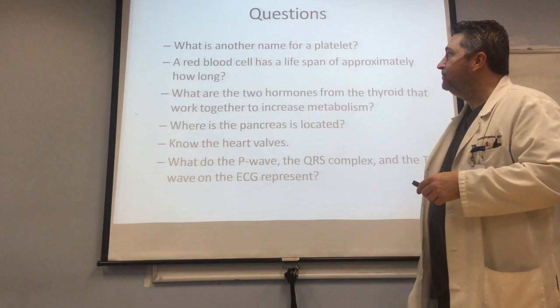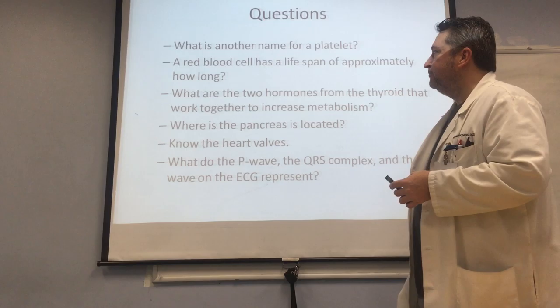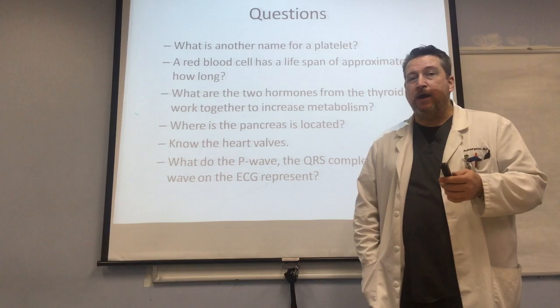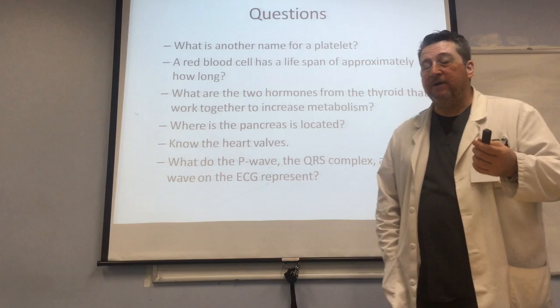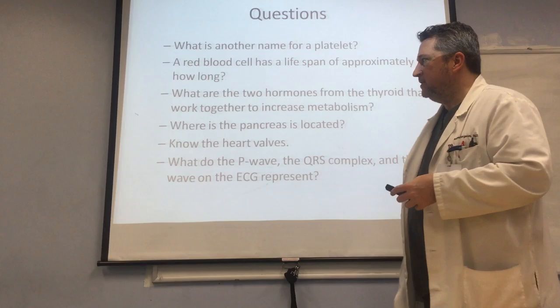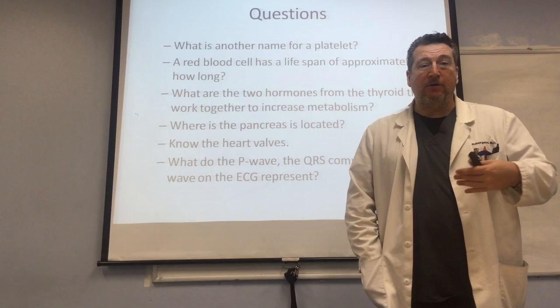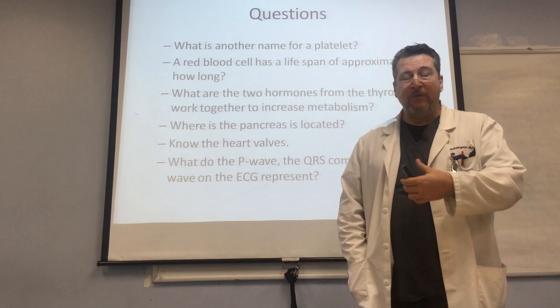A red blood cell has a lifespan of approximately 120 days. What are the two hormones from the thyroid that work together to increase metabolism? These are triiodothyronine and thyroxine, simply called T3 and T4. T3 is much more potent than T4, so we release about five times the amount of T4 as compared to T3, and we can actually convert T4 into T3 if we need it. The pancreas is located in the abdominal cavity, posterior to the stomach, tucked inside the first loop of the small intestines — the duodenum — and the tail points over to the spleen.